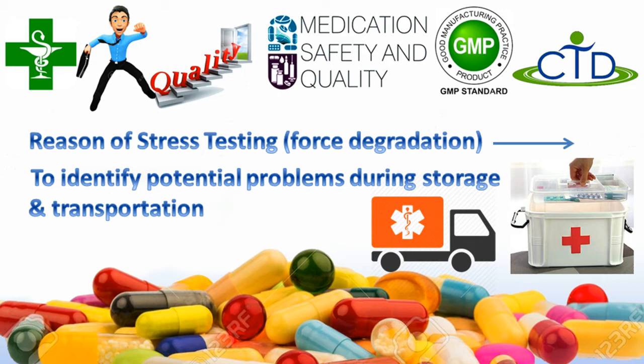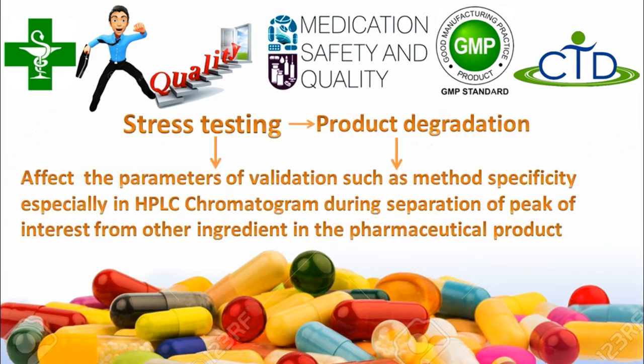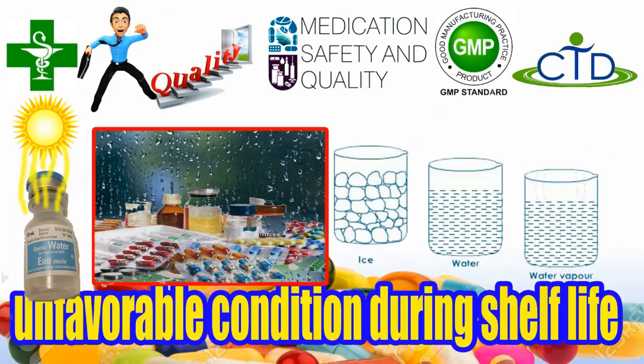During storage and transportation of medicine, we perform force degradation or stress testing for analytical method validation to observe the changes in chemical composition of the pharmaceutical product during shelf life, which can affect the parameters of validation and may require the analytical method to be revised. During shelf life, a pharmaceutical product may face worst environmental conditions such as uncontrolled humidity and temperature.